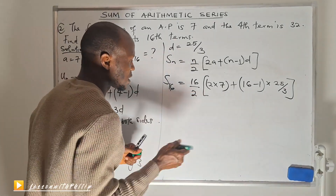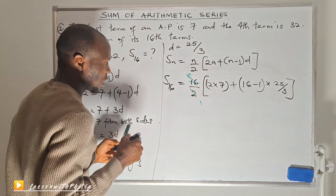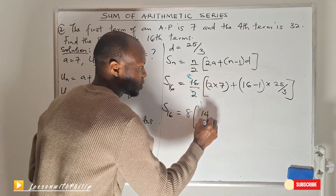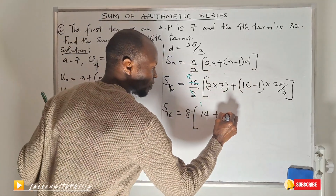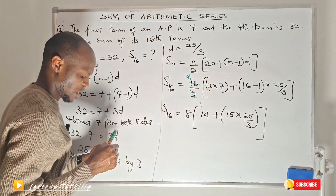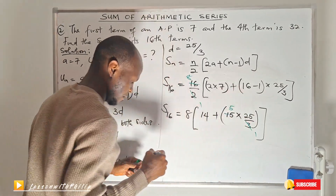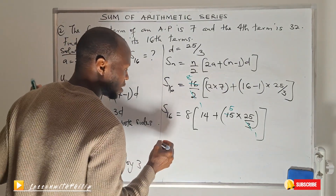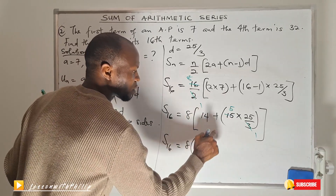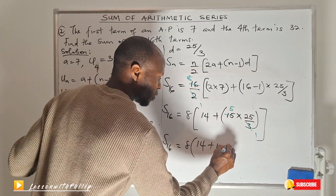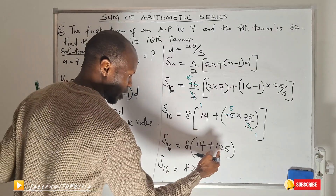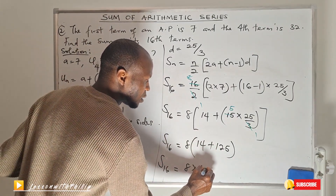Simplifying: 16 divided by 2 gives 8. So the sum of the 16th term equals 8 into bracket 2 times 7 is 14, plus 16 minus 1 is 15, times 25 divided by 3. Since 3 goes into 15 five times, that simplifies to 5 times 25 equals 125. So the sum equals 8 into bracket 14 plus 125.